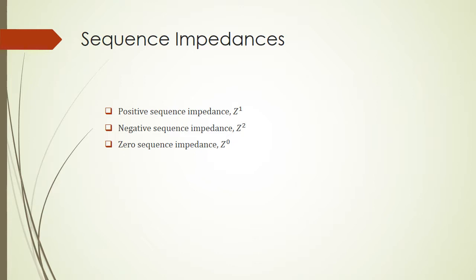Next we discuss sequence impedances. We can talk about the positive sequence, negative sequence, and most importantly the zero sequence. Mostly the positive sequence impedance is the same as the negative sequence impedance because in the AC circuit they just have the phase difference in reverse. But for the zero sequence, there is a significant difference because the phase difference here is zero. We'll talk about details later.